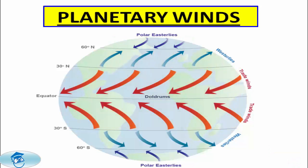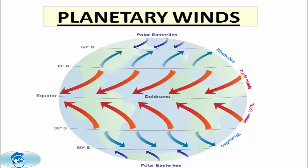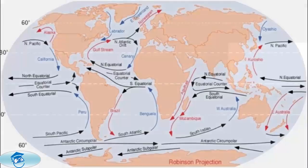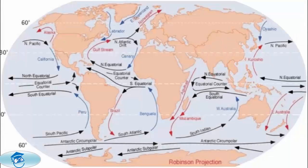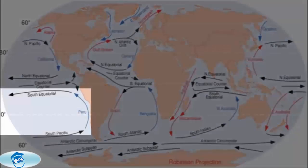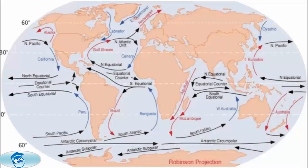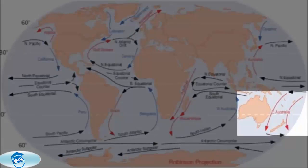Trade winds blow between the equator and the tropics, moving equatorial waters polewards and westwards, and warming the eastern coasts of continents. For example, the North-East trade winds move the North Equatorial Current to warm the eastern coast of Japan as the Kiroshio Current, while the South-East trade winds drive the South Equatorial Current, which warms the eastern coast of Australia as the East Australian Current.